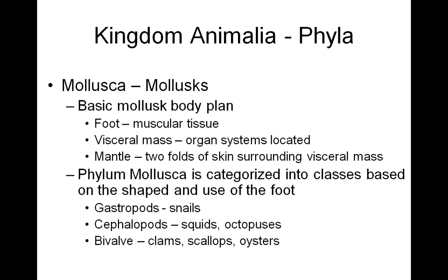My mollusks. Phylum Mollusca. The basic mollusks body plan consists of a foot, which is muscular tissue; the visceral mass, which is a region in the body where my organ systems are located; and then the mantle, which consists of two folds of skin that surround the visceral mass and secrete the material that builds the mollusks shell. Phylum Mollusca is characterized into classes based on the shape and use of this muscular foot. Let's look at gastropods — my snails — cephalopods, squid, octopus, and then bivalves — clams, scallops, and oysters.